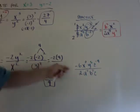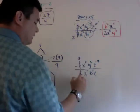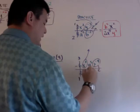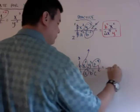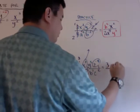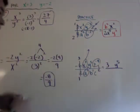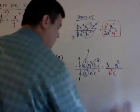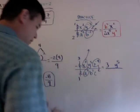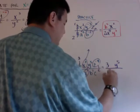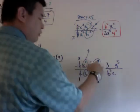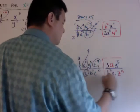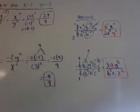For the next practice problem, I simplify the coefficient to 3 over 1, get rid of the zero exponent, move one term down and one term up. I get 3y to the fifth on top, and b cubed c on the bottom. Then z to the negative 4 moves down to become z to the fourth, and a to the negative 1 moves up to become a to the first. And there's your answer. Hope this helps — I know this was a little long!